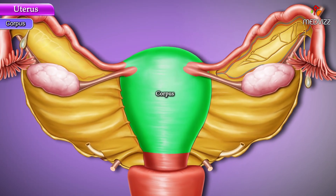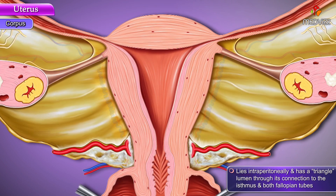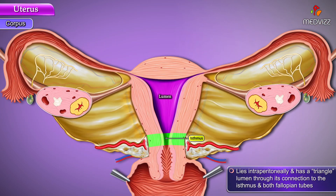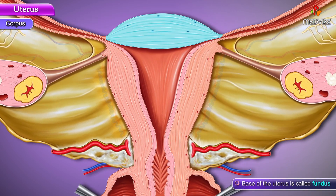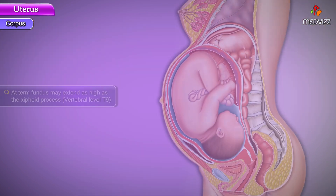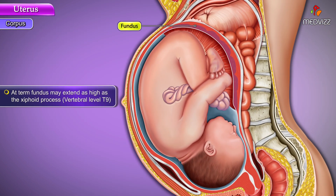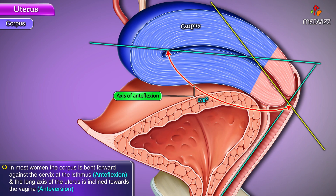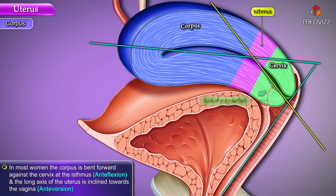The corpus or body lies intraperitoneally and has a triangular lumen through its connection to the isthmus and both fallopian tubes. The base of the uterus is called the fundus; at term, the fundus may extend as high as the xiphoid process, that is vertebral level T9. In most women, the corpus is bent forward against the cervix at the isthmus, also known as anteflexion, and the long axis of the uterus is inclined towards the vagina, known as anteversion.